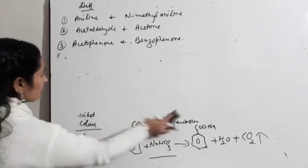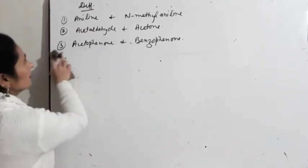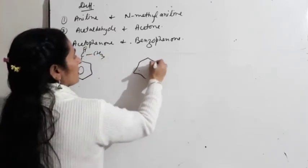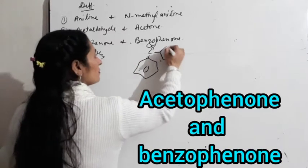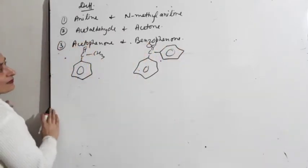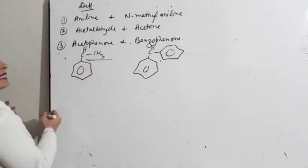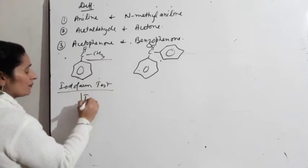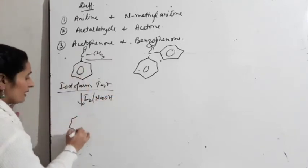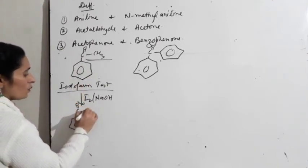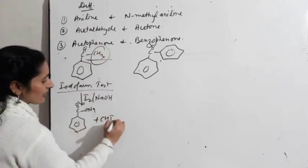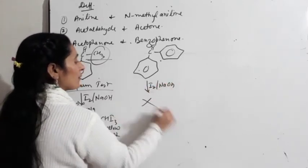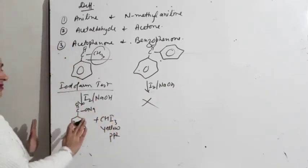Ab next pair: acetophenone and benzophenone. Yeh raha acetophenone, yeh raha benzophenone. Kaisi inko separate karein? Yes — acetophenone can give iodoform test. Toh yahan pe hum karenge iodoform test: jab iske andar iodine and sodium hydroxide add karenge, yeh dega C=O-ONa plus is group se ban jayega CHI3 — yellow precipitates. Benzophenone mein jab add karoge iodine and sodium hydroxide — there will be no reaction. Ho gaya color test — donon ki separation.